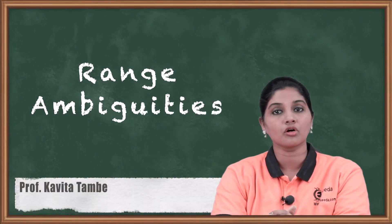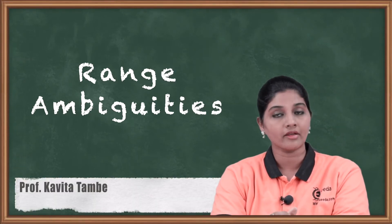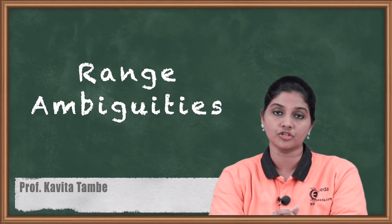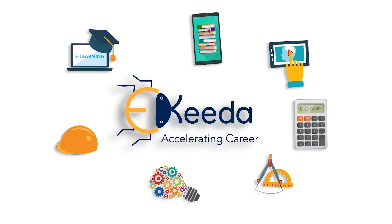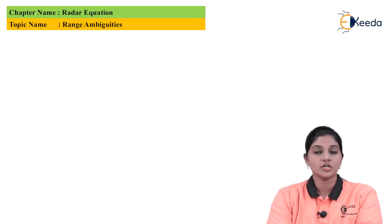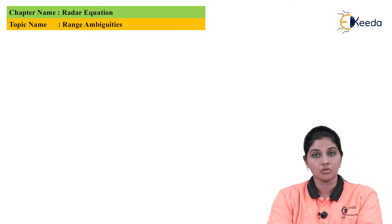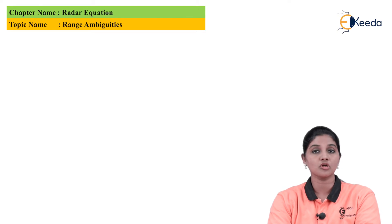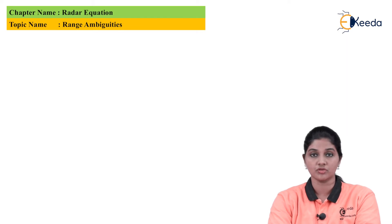Hello friends. In this video we are going to talk about the range ambiguities which are based on the factor Pulse Repetition Frequency. Pulse Repetition Frequency plays an important role in determining the range ambiguity in Doppler as well as in range. So in this topic we are basically going to find out how the range ambiguity can be calculated by using the Pulse Repetition Frequency.